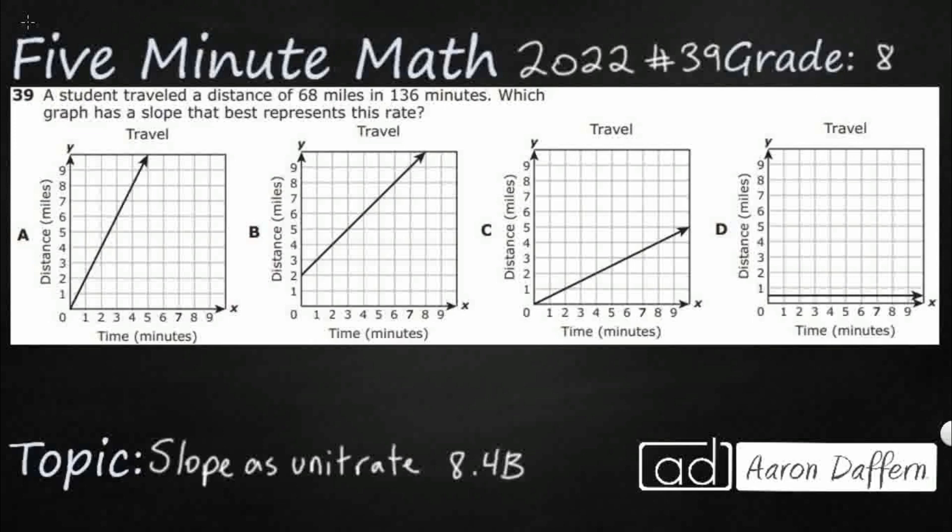We have a student that is traveling 68 miles in 136 minutes. Which graph has a slope that best represents this rate? In each of these graphs, the y-axis is going to be your miles, and it looks like your x-axis is going to be your minutes.